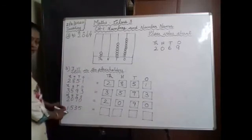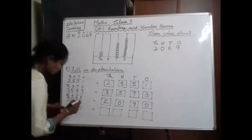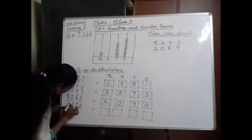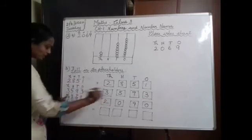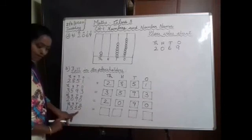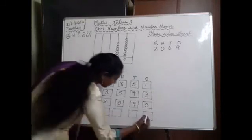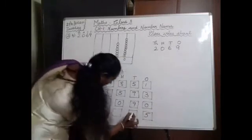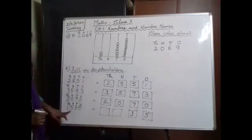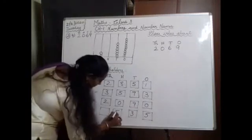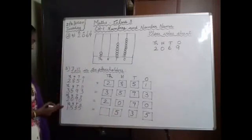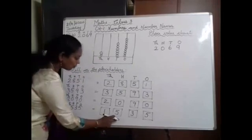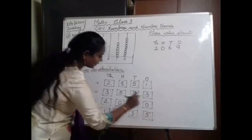Last number: 1,535. Write 1s, 10s, 100s, 1000s. In the 1s place, 5. In the 10s place, 3. In the 100s place, 5. In the 1000s place, 1. So 1,535.